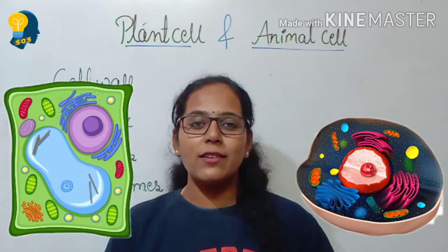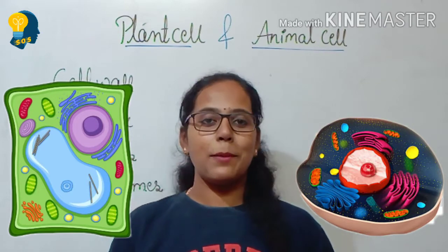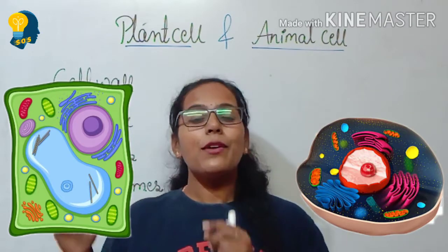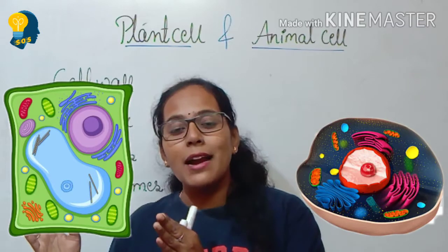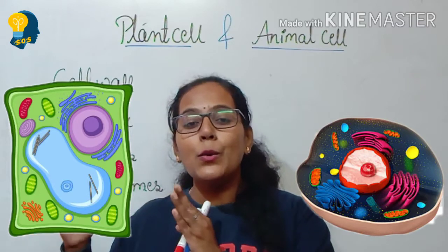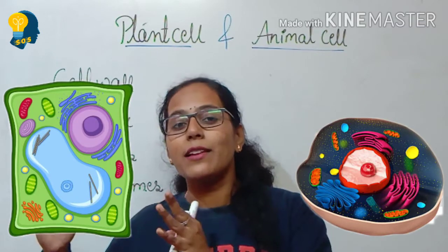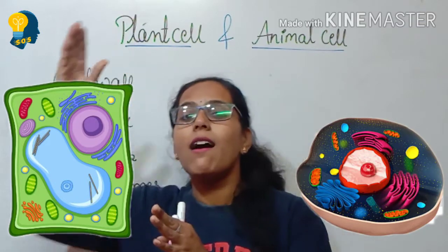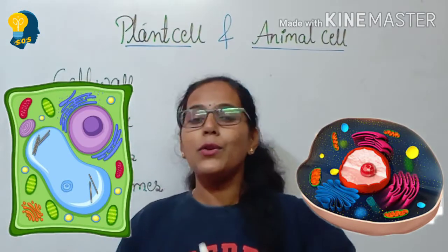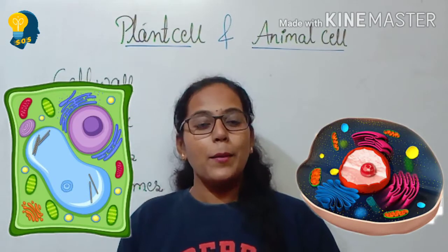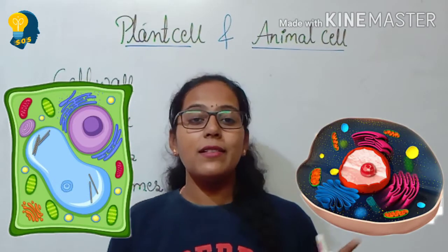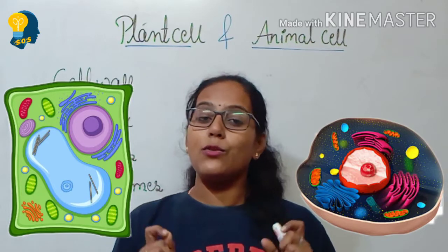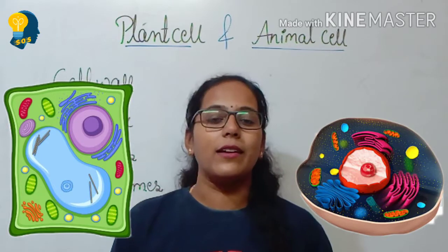Now let us talk about the second difference between the plant cell and the animal cell. When you look at the plant cell, you can easily see there is presence of a large vacuole inside. But in the animal cell, the vacuoles are smaller in size — sometimes they are also absent.